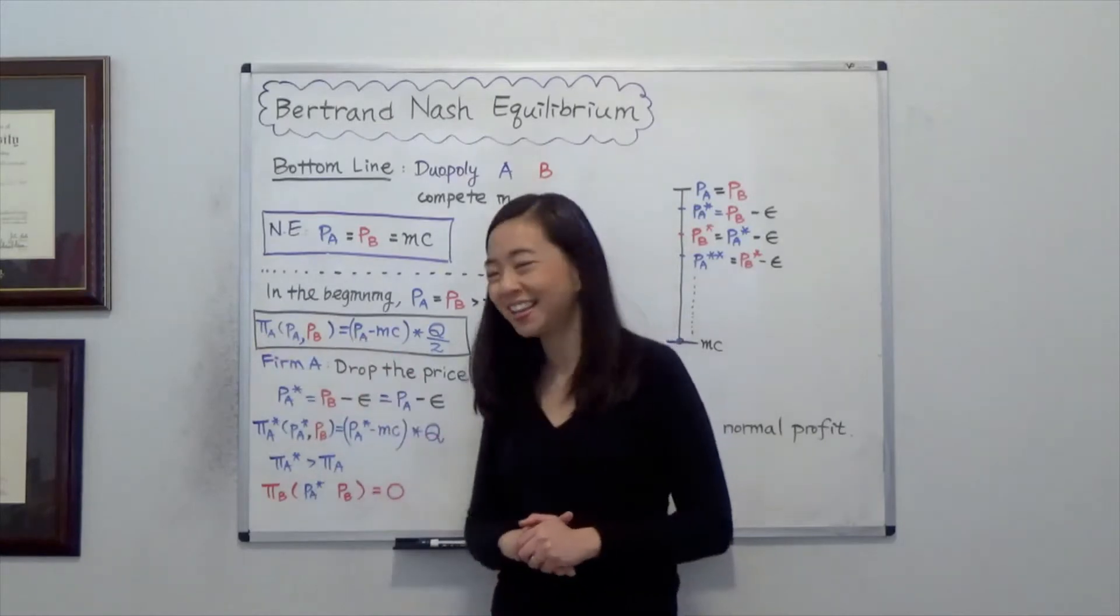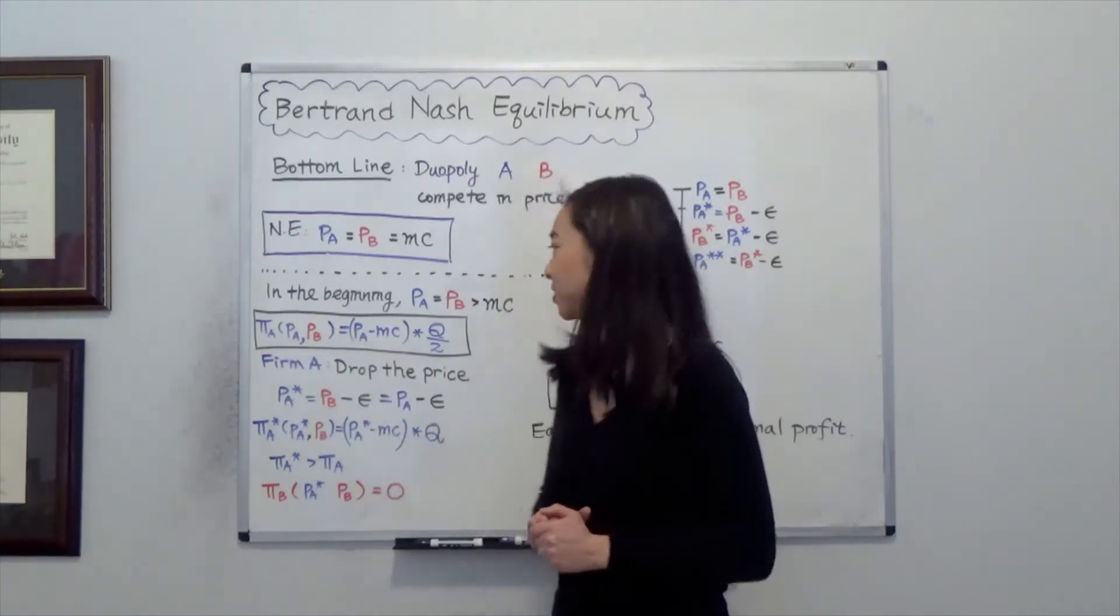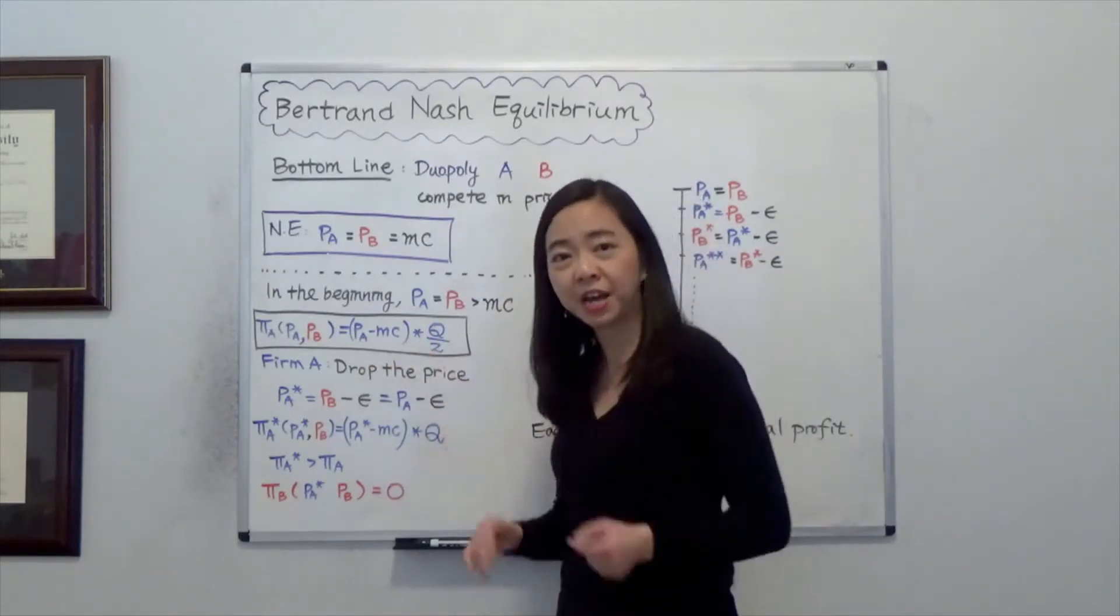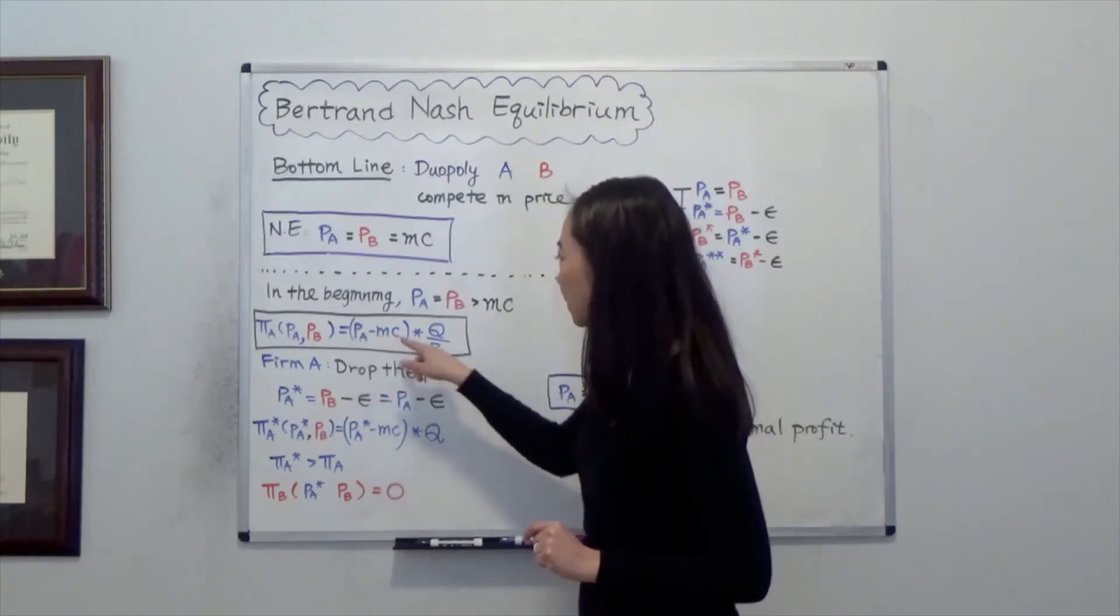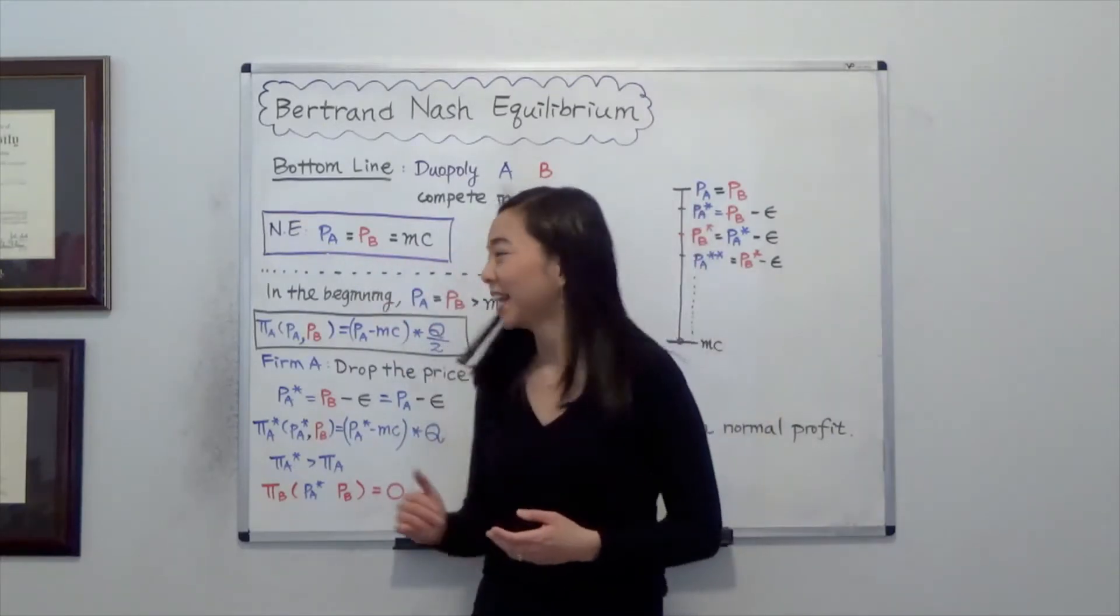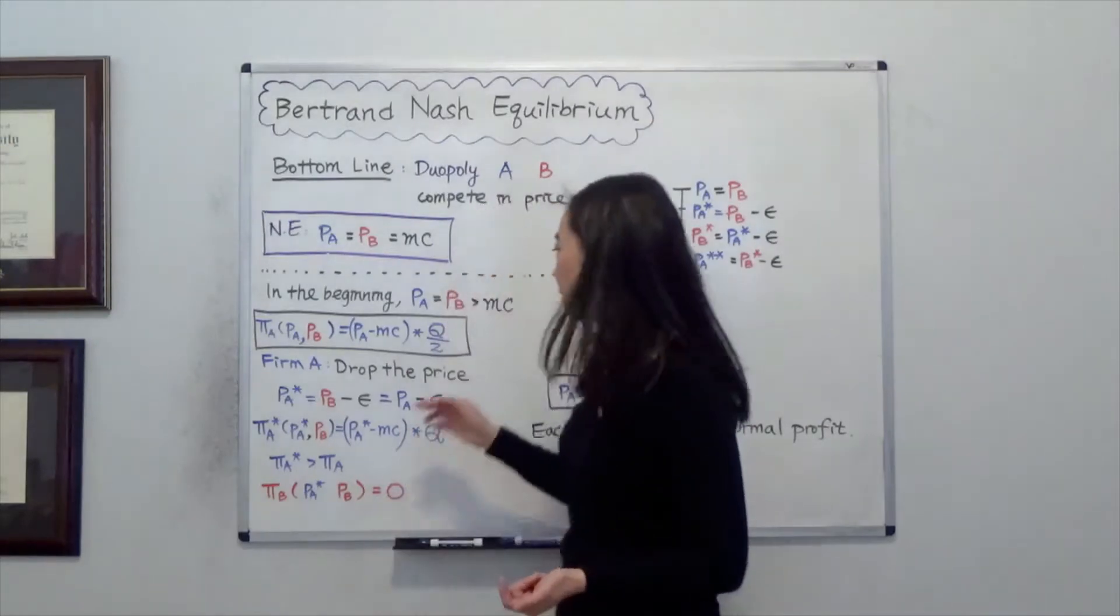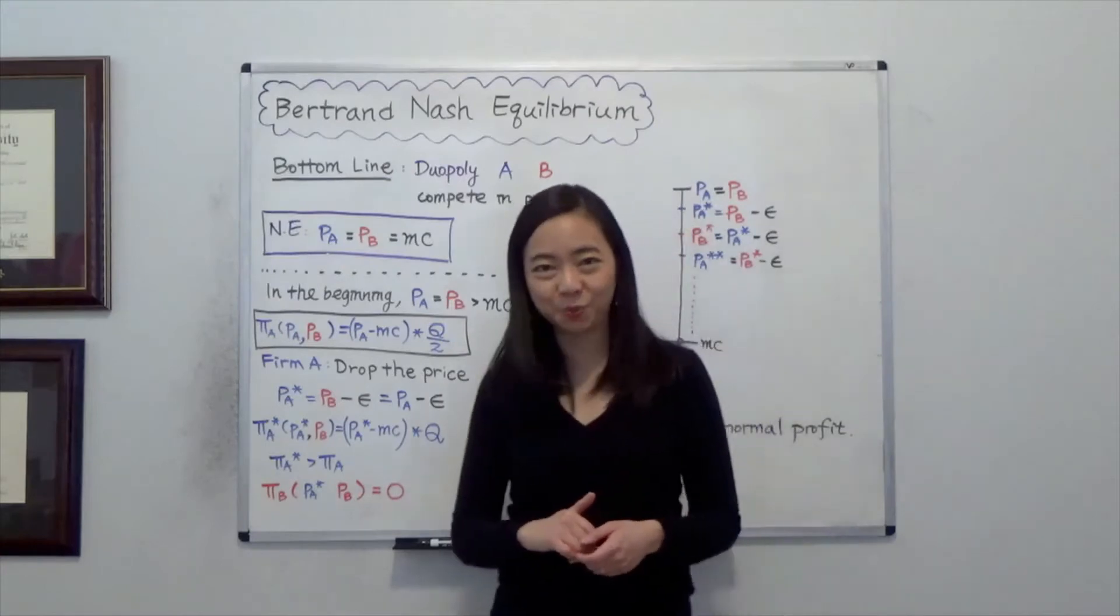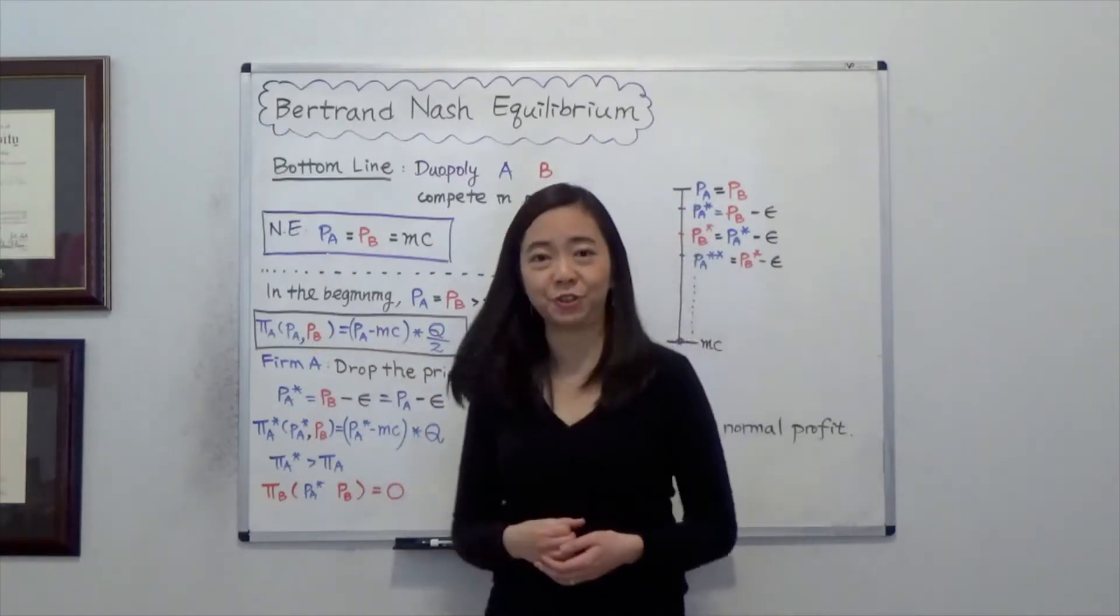So πA, the profit of firm A, is a function of PA and PB and that equals PA minus marginal cost. Suppose we don't have fixed cost and marginal cost is only cost. So PA minus marginal cost times the quantity. Now because we have a duopoly and the firms have the same price, so they share the market. So the quantity equals the market quantity Q divided by 2. So that's the profit of firm A, which is also the profit of firm B.